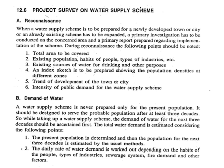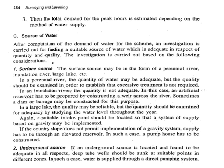The water supply scheme is never prepared only for the present population. It should be designed to serve the probable population after at least three decades. The total water demand is estimated considering: the present population determined by the usual method; the daily rate of water demand worked out depending on habits of people, types of industries, service system, and other factors; and the total demand for the peak hour estimated depending on the method of water supply.